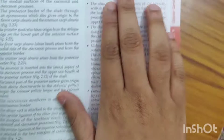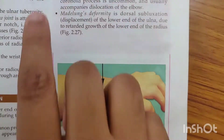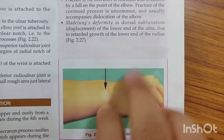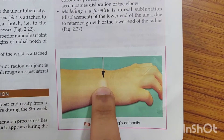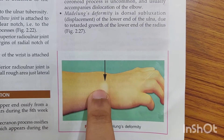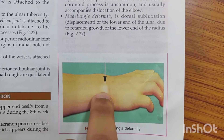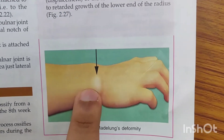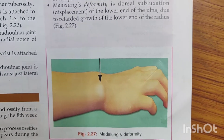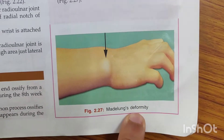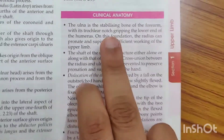Coming to the clinical anatomy of the ulna, the important thing is Madelung deformity. It is the dorsal subluxation or displacement of the lower end of the ulna because there is retarded growth of the radius, so that the lower end of the ulna becomes prominent. This is called Madelung deformity.